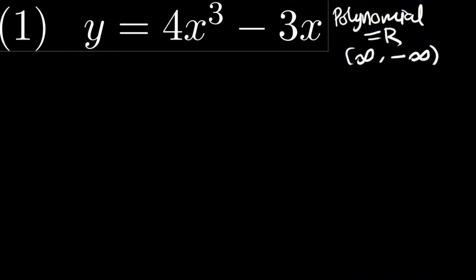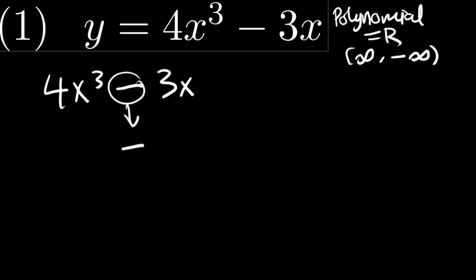We have here 4x cubed minus 3x. We will write the minus as it is, and then use the power rule. Take 3 multiplied by 4, which gives us 12. We subtract 1 from the exponent 3 to get x squared. Minus the derivative of 3x, which is 3. So the derivative is 12x squared minus 3.